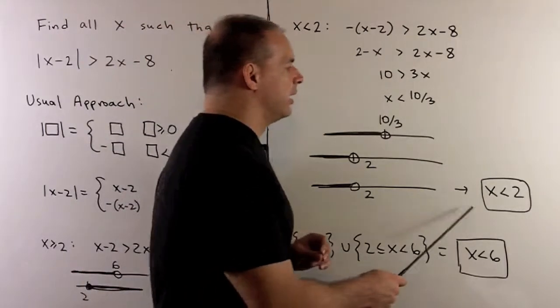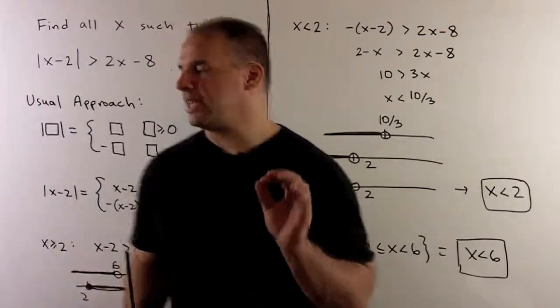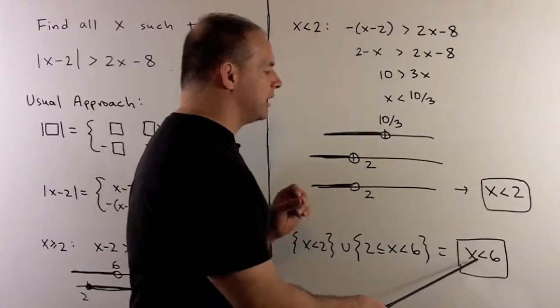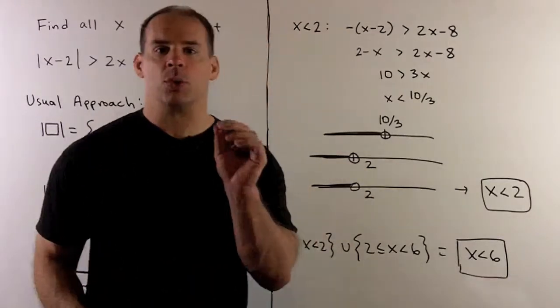If we take these points, put them together with these points, out comes x strictly less than 6, and that's what we had from before.